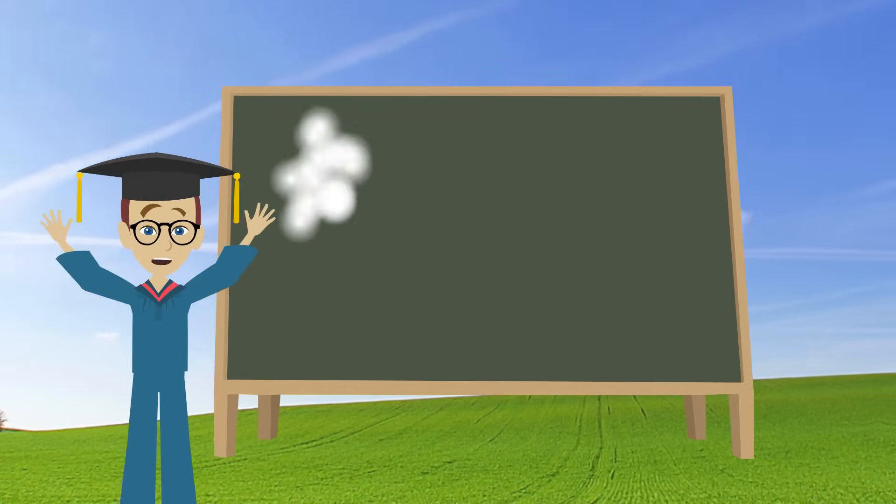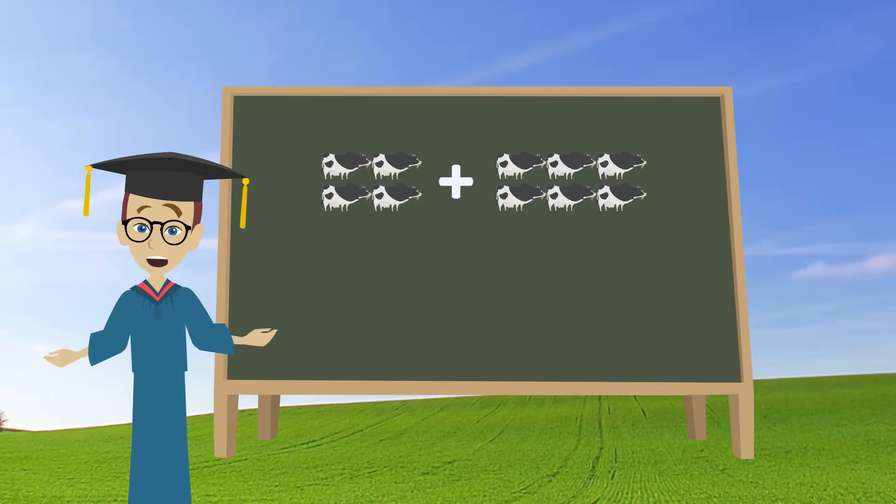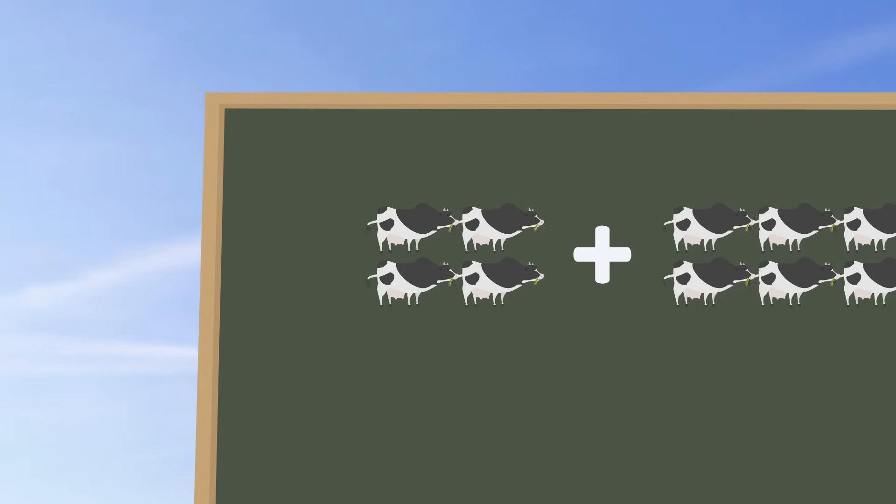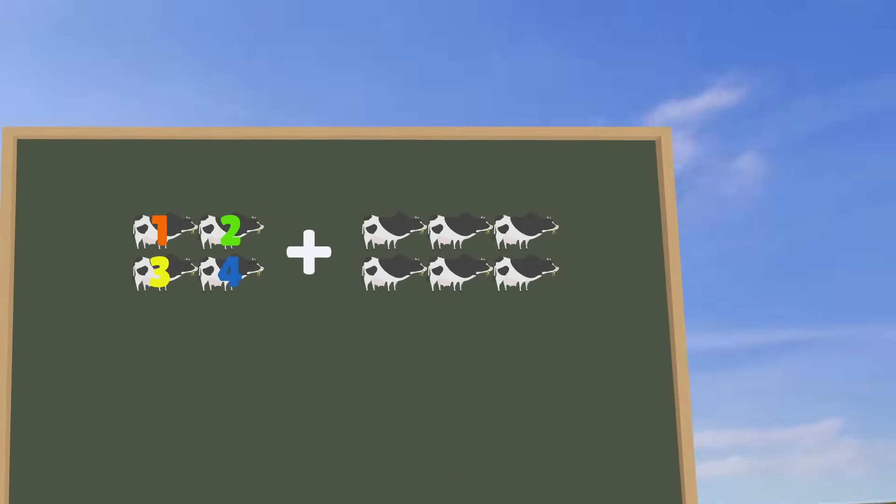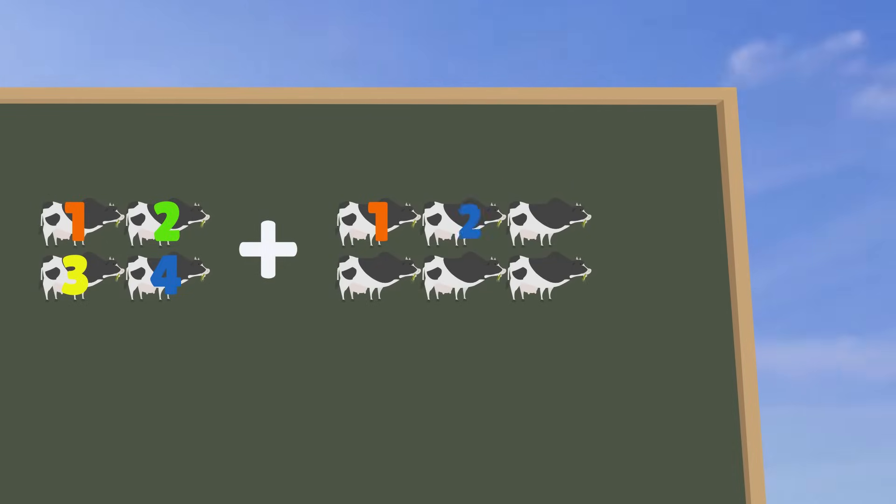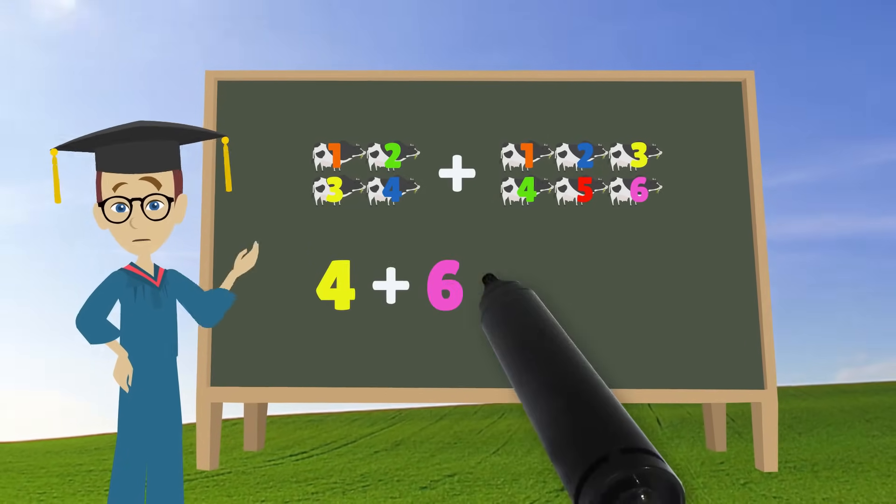Alright, first puzzle. Addition with cows. Let's count them before we do the math. So that's one, two, three, four. And the other side. One, two, three, four, five, six. That's four plus six.